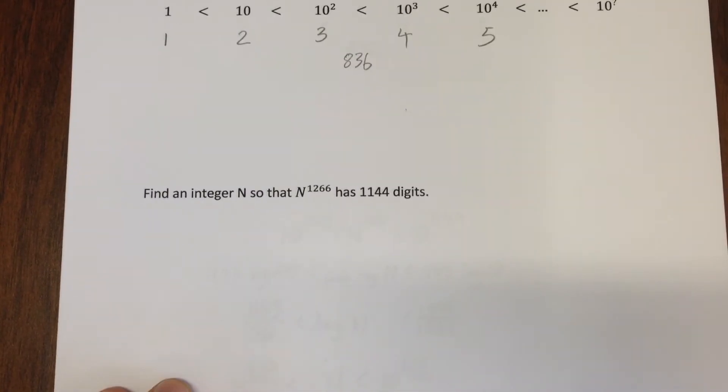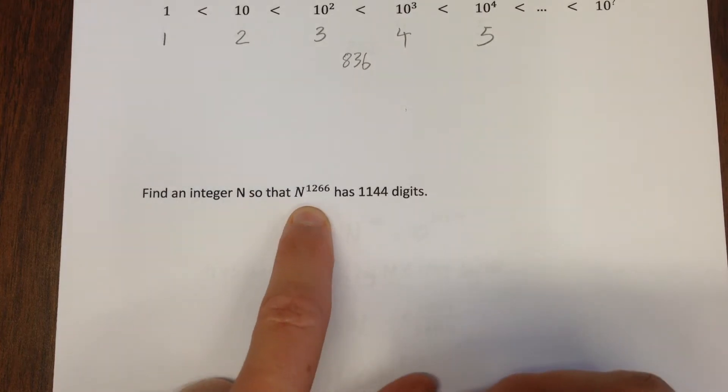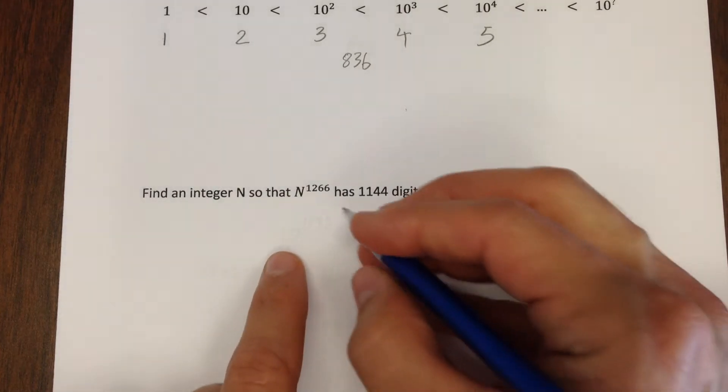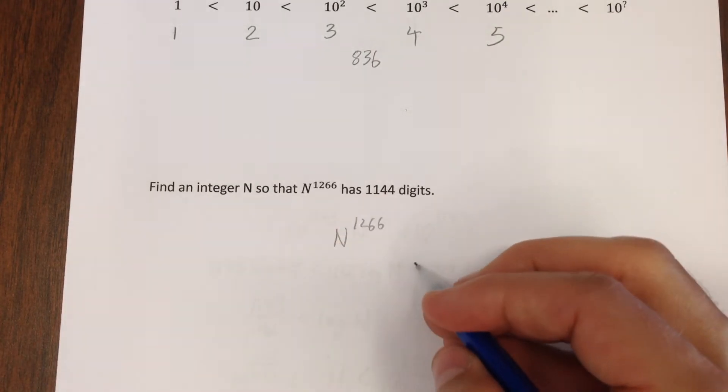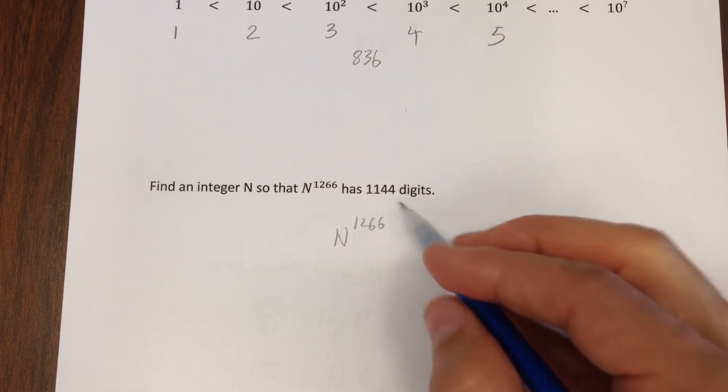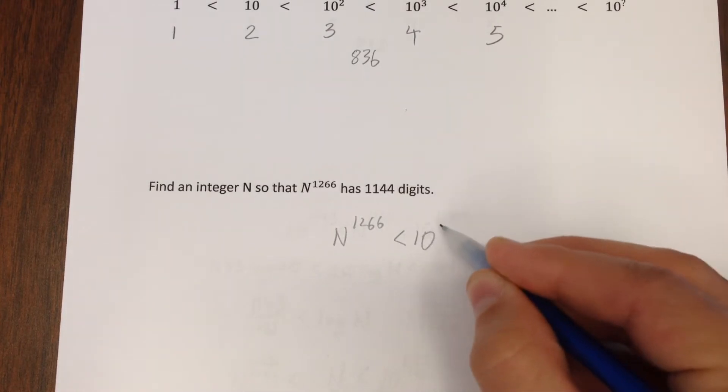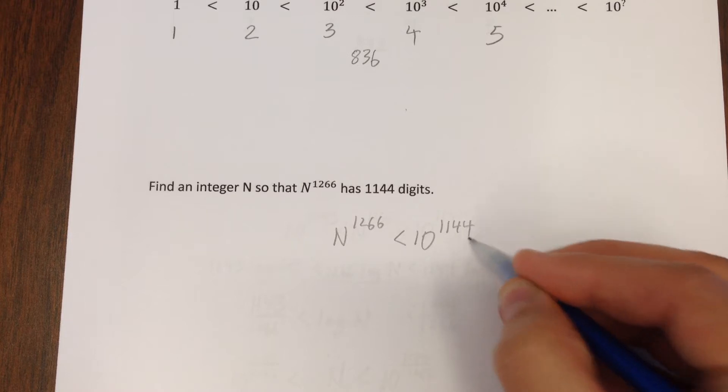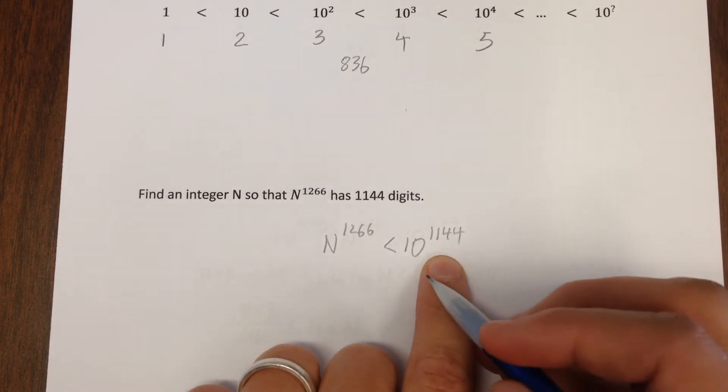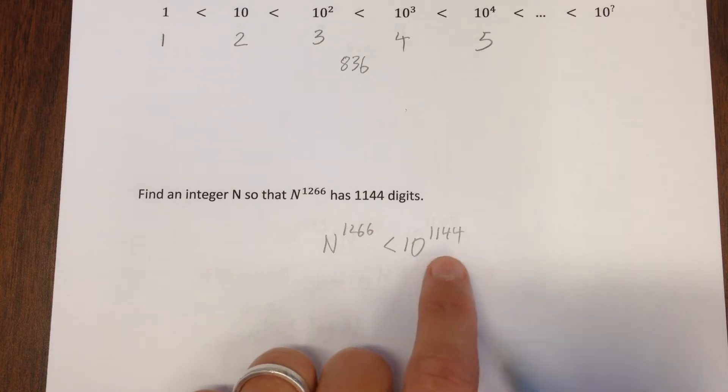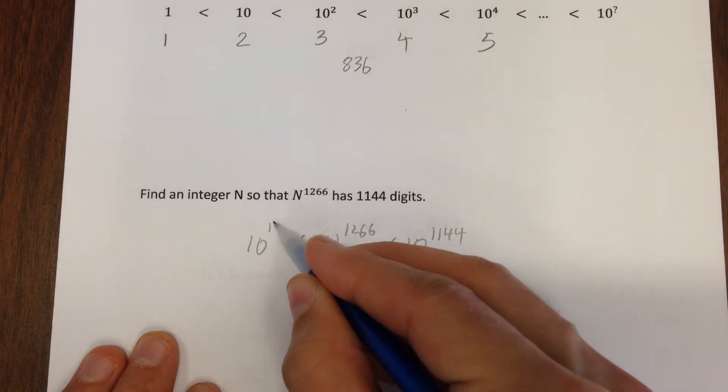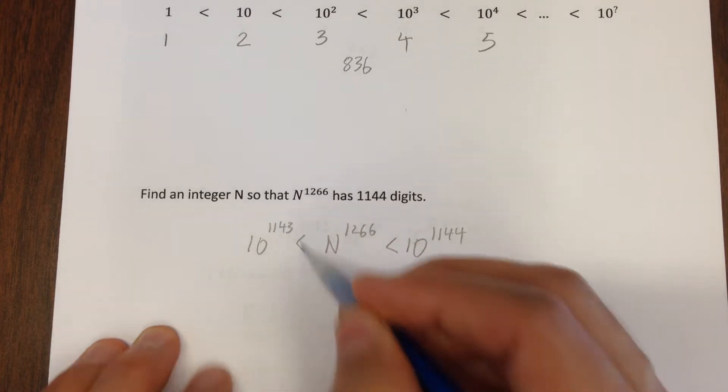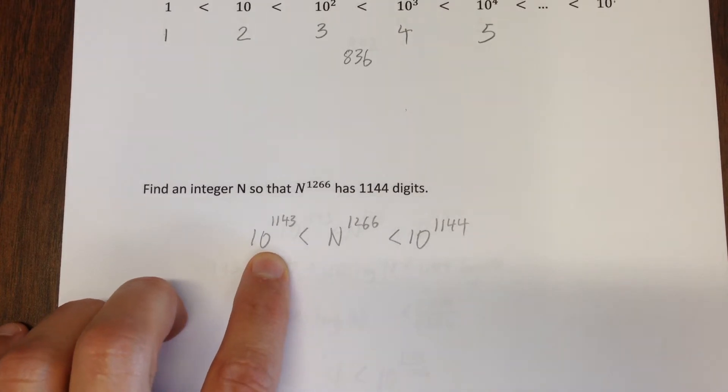So you find a problem like find an integer n so that n to the 1266 has 1144 digits. I know it better be less than 10 to the 1144. That's the smallest 1145 digit number, a one, and then 1144 zeros, and bigger than 10 to the 1143. That's the smallest 1144 digit number.